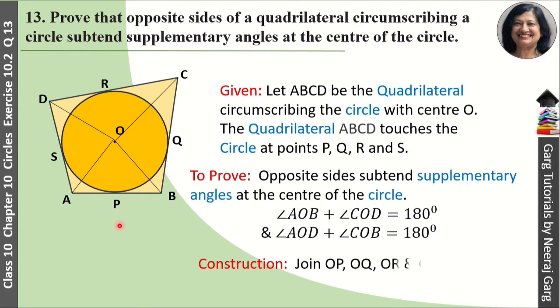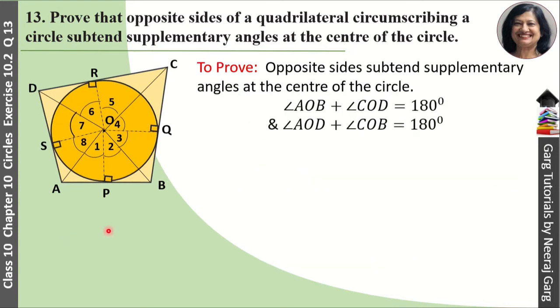For construction, we'll join OP, OQ, OR, and OS. Now, we know that at the point of contact, the radius and tangent are perpendicular to each other, forming 90-degree angles. So all four angles at P, Q, R, S are 90 degrees. Let's label the angles around O as 1, 2, 3, 4, 5, 6, 7, 8.